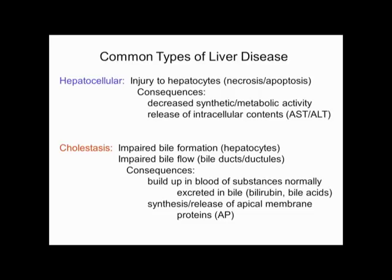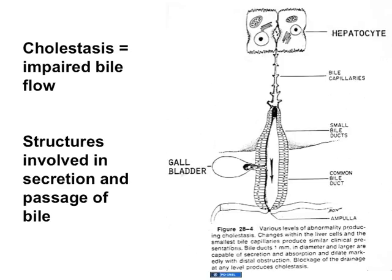To think about these diseases, you have to go through all of the places that bile travels, because diseases in any one of those locations can cause cholestasis. From problems in the generation of bile at the canalicular membrane, the apical membrane of hepatocytes, through the tiny little bile canaliculi, the small and larger intrahepatic bile ducts in the portal tracts, and then the extrahepatic bile ducts all the way down to the sphincter of Oddi and the exit.